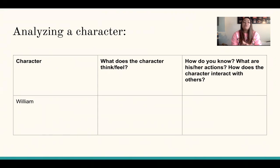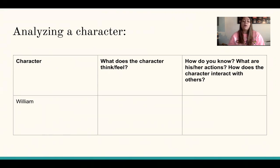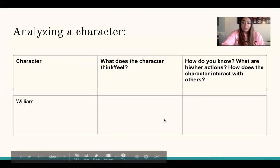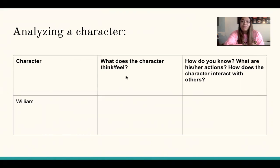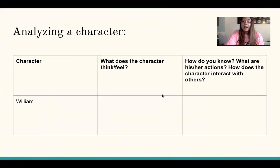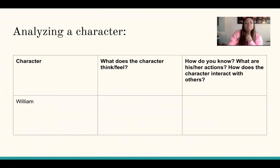Okay, hopefully at this point you've already filled in the gist of this scene — that's important because we need it moving on. So what I'm going to do is model how to fill in this chart and analyze how a character feels. For my example I'm going to use William. So here's the chart — William is in the bottom left-hand box, and in the middle I'm going to fill in what does this character think or feel, and then how do I know.